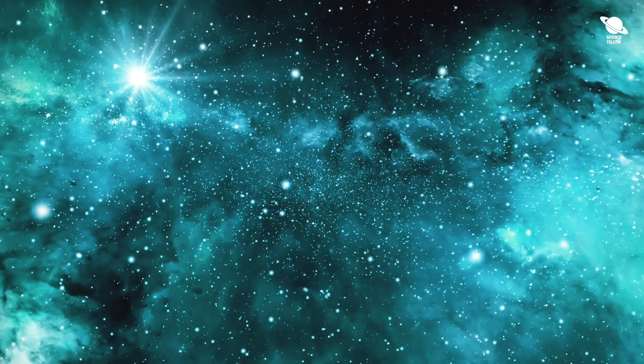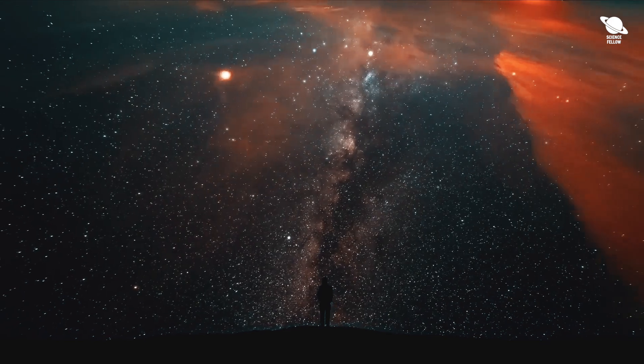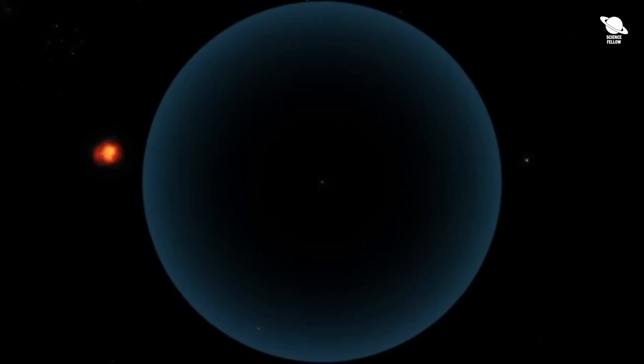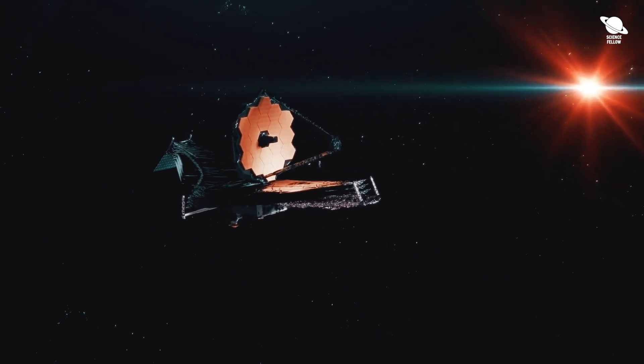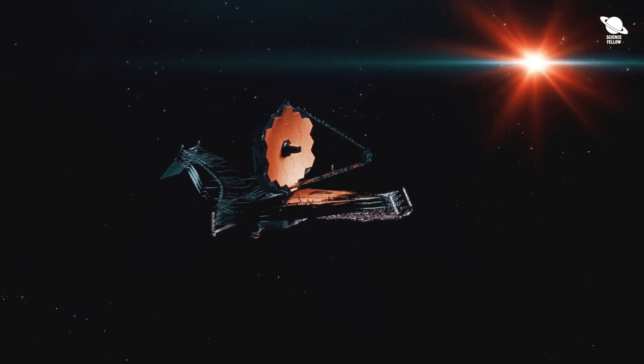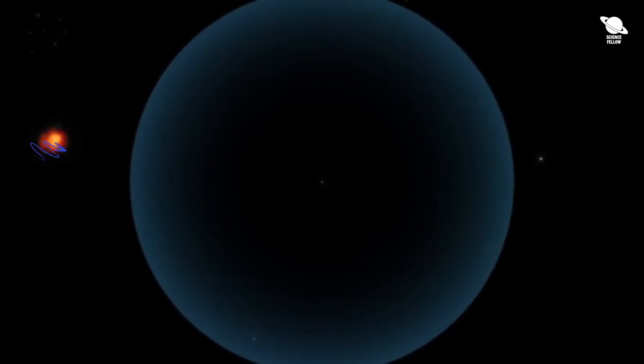The light reaching us from inside this sphere must have travelled for a long time to reach our eyes. Anything lying beyond this sphere will remain forever invisible to us. Even with the most advanced telescopes we can imagine, we won't be able to see beyond this boundary because the light from there hasn't reached us yet.